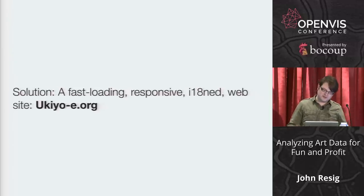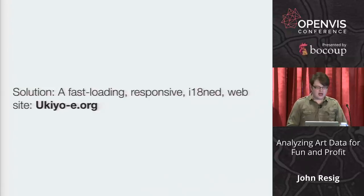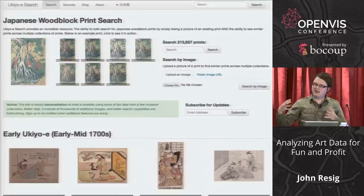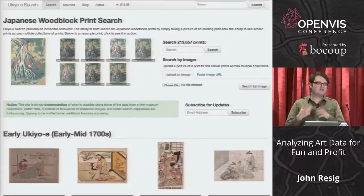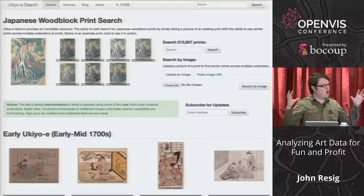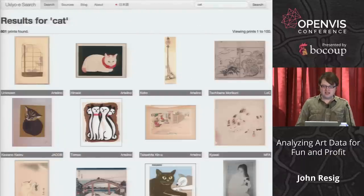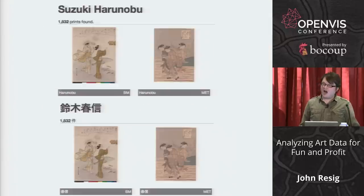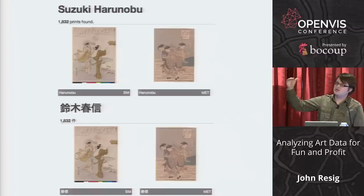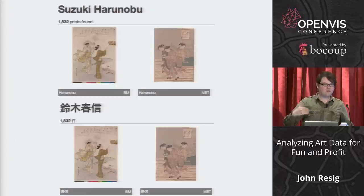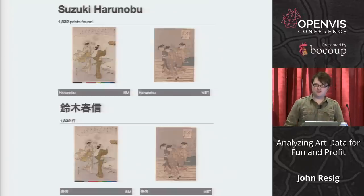So I built a website called ukiyo-e.org — also woodblock.org and other domain names. It's an aggregation of Japanese woodblock prints from many different museums, universities, auction houses, and dealers, pulling all these print images into a single unified database. I make it very fast, completely index all the text so you can search for things like "cat" and get all prints depicting cats, and I internationalize everything so you can search in both English and Japanese.